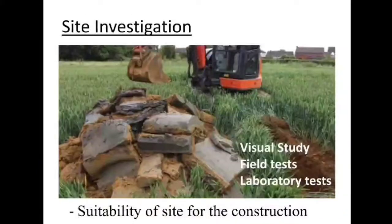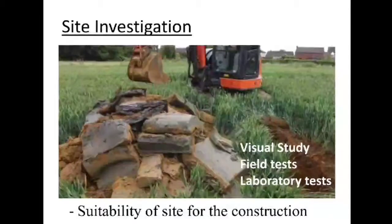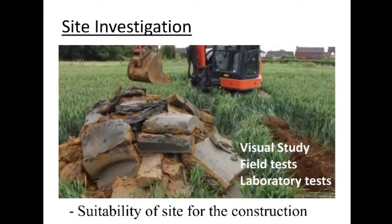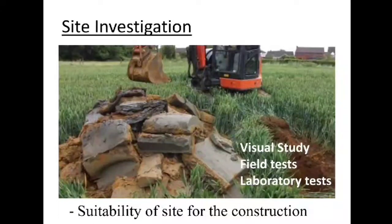In site investigation, firstly you go to the site and do a visual study of the area. To understand the properties of the underlying materials, you do field tests, and if required, you go for laboratory tests. This is basically to understand whether the site is suitable for one particular construction purpose.